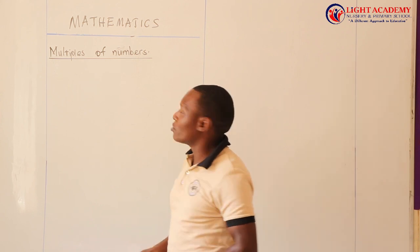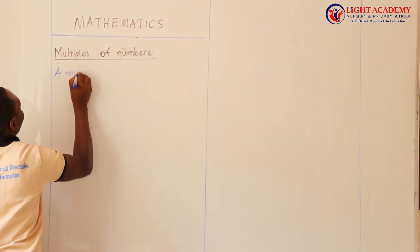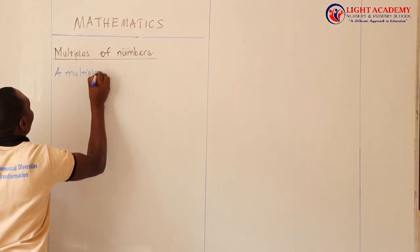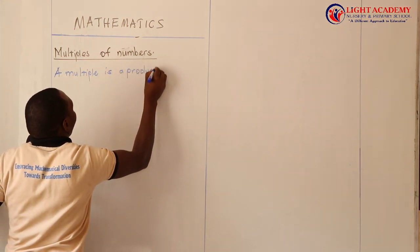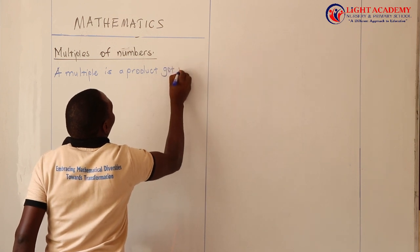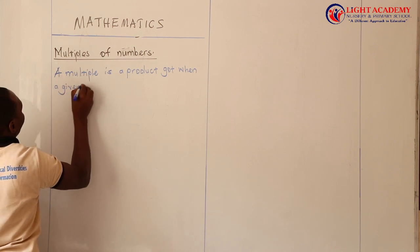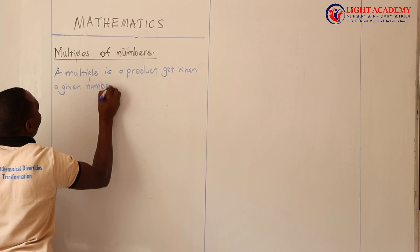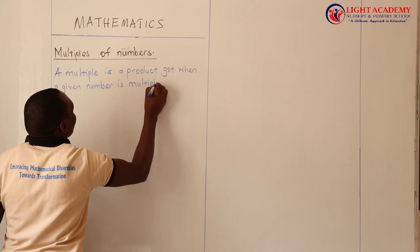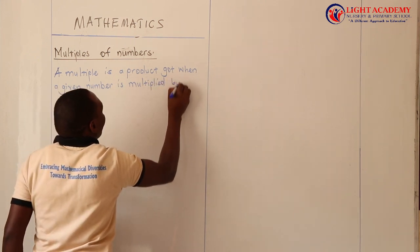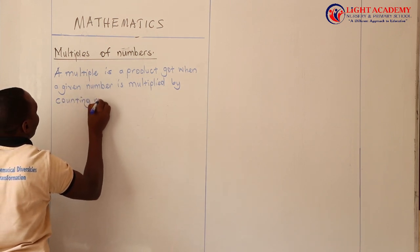What are multiples? A multiple is a product got when a given number is multiplied by counting numbers.